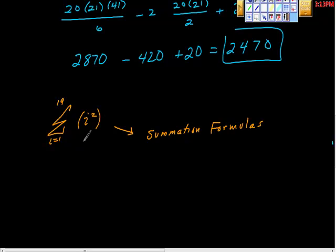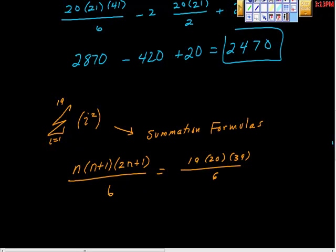And we know that i squared is n times the quantity n plus 1 times the quantity 2n plus 1, all over 6, which gave us, right, n is 19 now, so it gave us 19 times 20 times 39, all over 6.